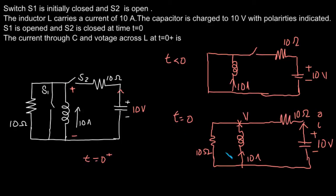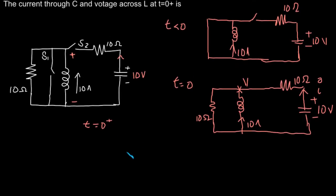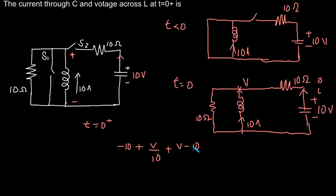We use the property that the current through the inductor does not change suddenly, so whatever current flows at t equal to 0 will also flow at t equal to 0 plus. Similarly, the voltage across the capacitor at t equal to 0 also appears at t equal to 0 plus. Writing KCL to find v: minus 10 amperes incoming through the inductor, treating incoming current as negative gives minus 10, plus outgoing current through 10 ohm as v by 10, plus the current through the other branch as v minus 10 by 10, equals 0.